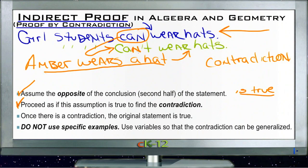Once we've found that contradiction, then we know that the original statement must be true, since the opposite can't be true. It was proven to be false that the opposite was true.